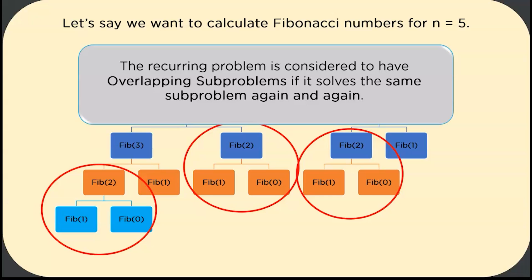This repetition of the same sub-problem while solving a more significant problem is called the overlapping sub-problem property. Due to multiple calls, the computational complexity of recursive programs almost increases exponentially, and those calculations are entirely unnecessary. But before we understand how to avoid all unnecessary computation, let's try to figure out the time complexity of our Fib function.